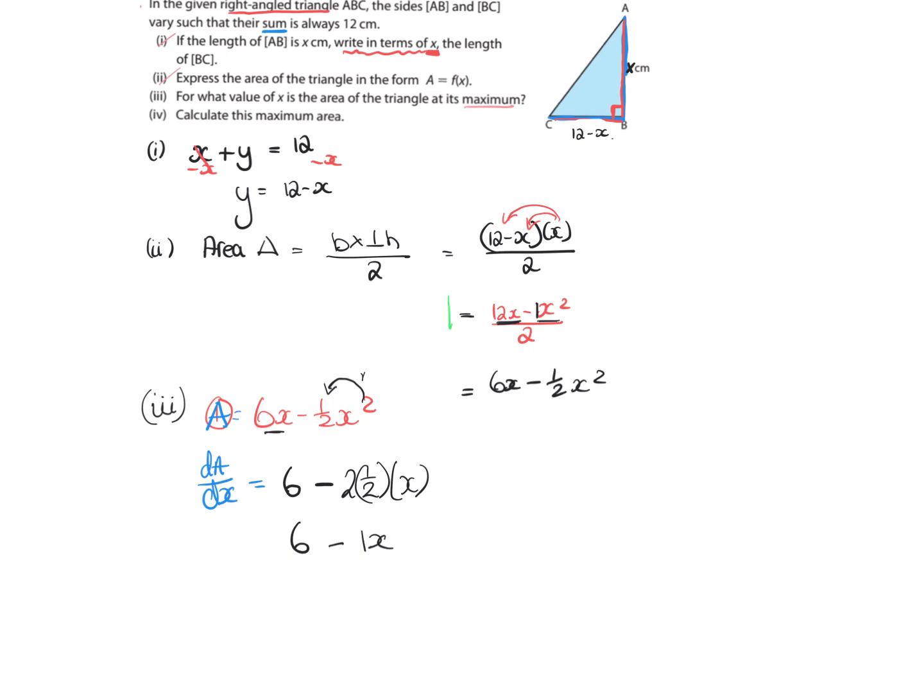Now we are going to find a value for x, so we are going to let this equal 0. I'm going to have -1x = -6, so x = 6. Once I have that value, I'm telling myself the maximum value that x can be is 6.